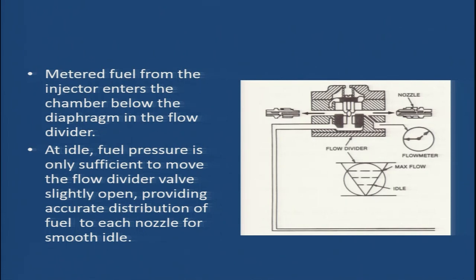At idle, fuel pressure is only sufficient to move the flow divider valve slightly open, providing accurate distribution of fuel to each nozzle for smooth idle. This slight opening of the valve provides equal distribution of fuel to each nozzle for smooth idling, as illustrated by the idle mark in the figure.